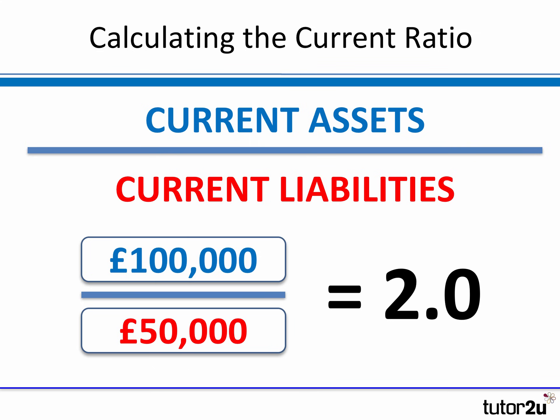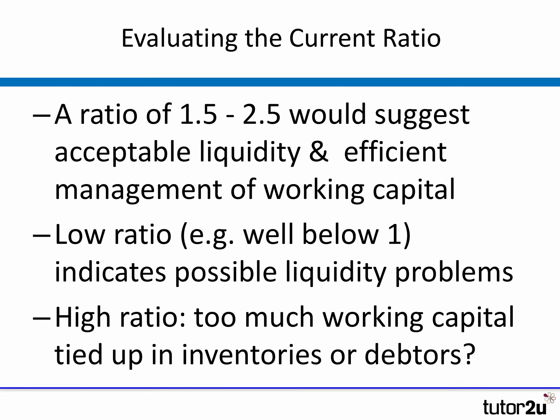So what does the current ratio mean? Most businesses would want a current ratio of more than 1 — meaning current assets are at least enough to pay amounts owed. Typically a ratio of between 1.5 and 2.5, or perhaps up to 3, would suggest the business is in a decent liquidity position and can pay its bills as they fall due. A ratio below 1 might suggest the business is struggling to pay current liabilities.